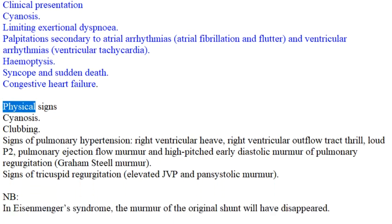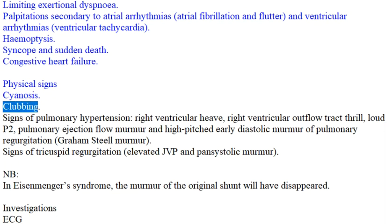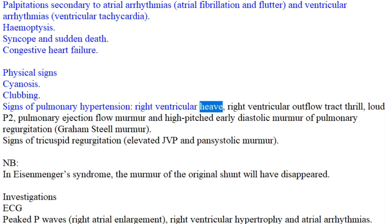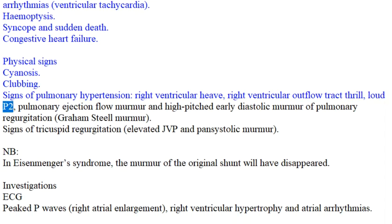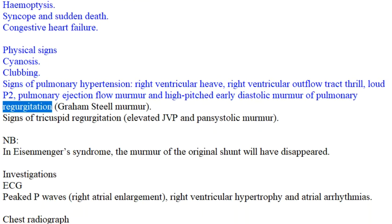Physical Signs include cyanosis and clubbing. Signs of pulmonary hypertension include right ventricular heave, right ventricular outflow tract thrill, loud P2, pulmonary ejection flow murmur, and high-pitched early diastolic murmur of pulmonary regurgitation known as the Graham Steell murmur.